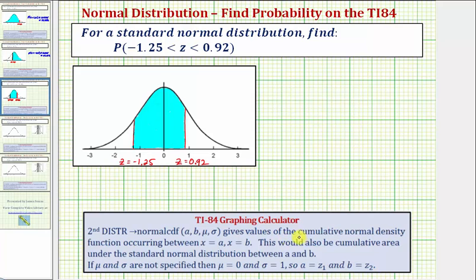This feature gives values for the cumulative normal density function occurring between x equals A and x equals B. This would also be the cumulative area under the standard normal distribution between A and B. But if we set mu equal to zero and sigma equal to one, then A and B will be the upper and lower bound z-scores. So notice in this case, the lower bound z-score is negative 1.25 and the upper bound z-score is 0.92.